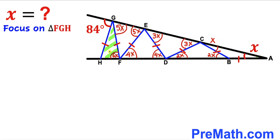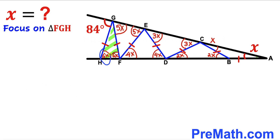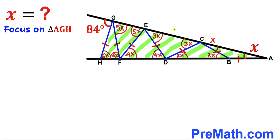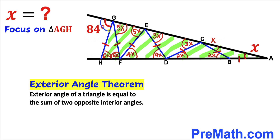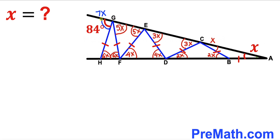Now let's focus on triangle FGH. We can see this is an isosceles triangle since this side length equals this side length, so this angle has got to be congruent to this angle. If this angle is 6X, then this angle has got to be 6X as well. Finally, let's focus on the big shaded triangle AGH. Recalling the exterior angle theorem, this exterior angle equals 6X plus X, which makes 7X.